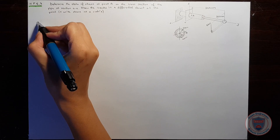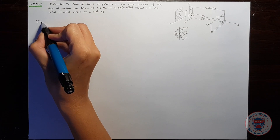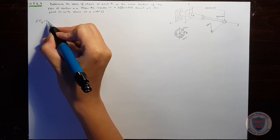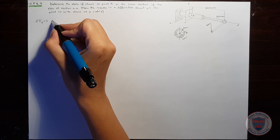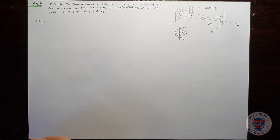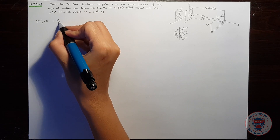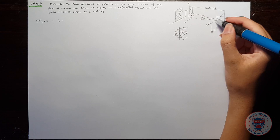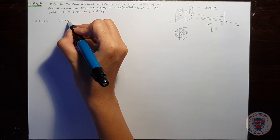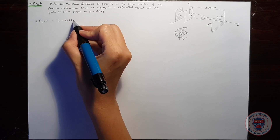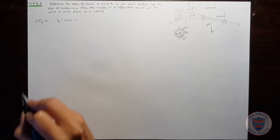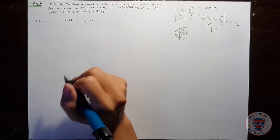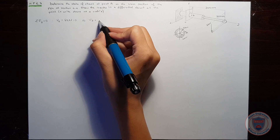Let's start with the forces. We know that the sum of forces in the z-direction will be equal to zero. In the z-direction, we have shear and we have the 6 kilonewtons, which is in the negative direction. So we will obtain the shear in the z-direction as 6 kilonewtons.